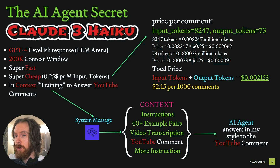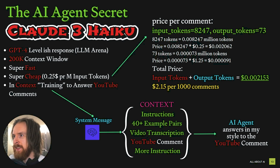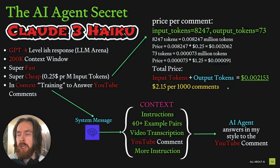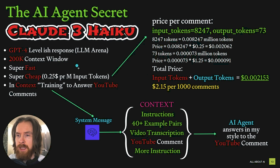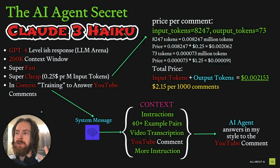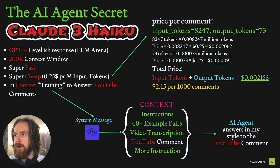If you use GPT-4 or Claude 3 Opus for this, that's going to cost you a lot. I think this is like 50 to 100% cheaper than ChatGPT 3.5 Turbo, with much better response and a much better context window. So I would say Claude 3 Haiku has kind of enabled the AI agent dream I had for about six months to a year ago.